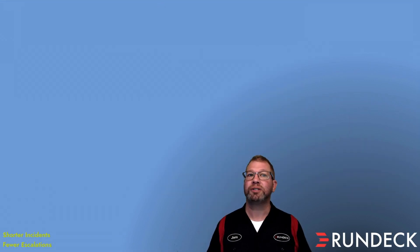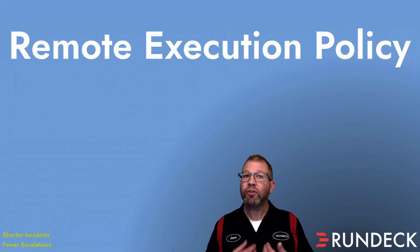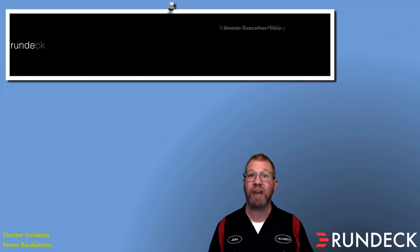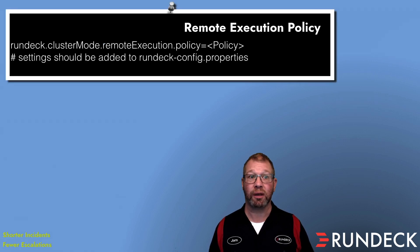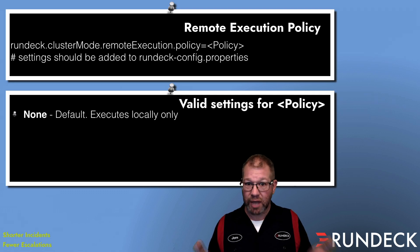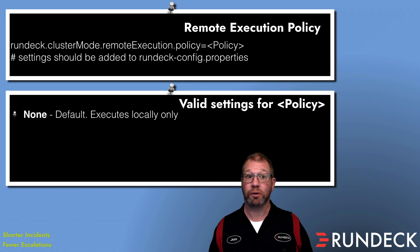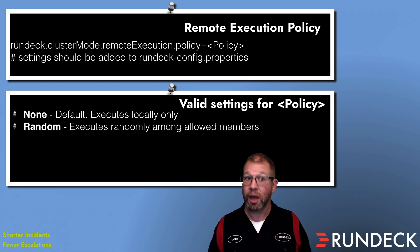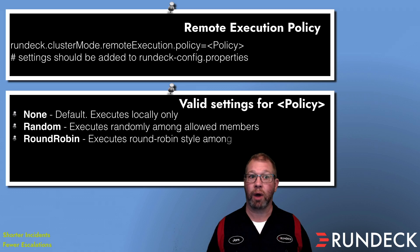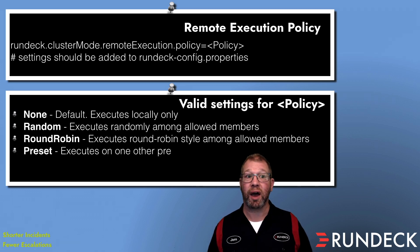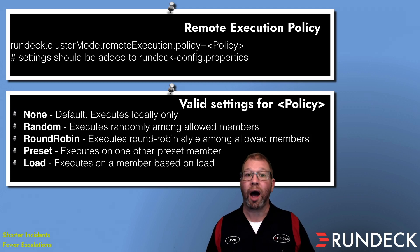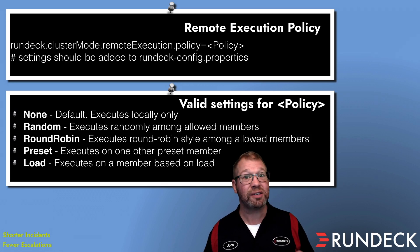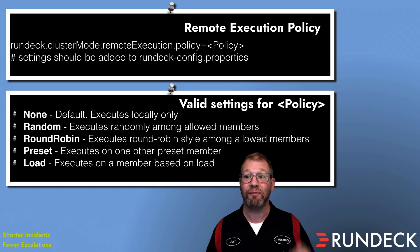The cluster remote execution configuration policy contains settings that indicate what method of assignment will be used for particular jobs. The valid options are: none (default — executes locally), random (executes randomly among allowed members), round robin (uses a round robin sequence), preset (defines a secondary cluster member to execute on), and load (assigns jobs to cluster members based on load). If you have an extremely busy Rundeck deployment, the load option can come in very handy.